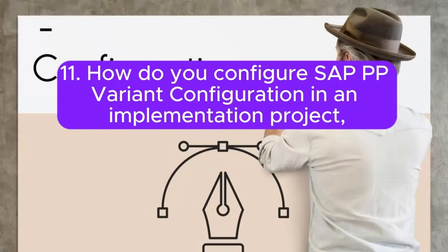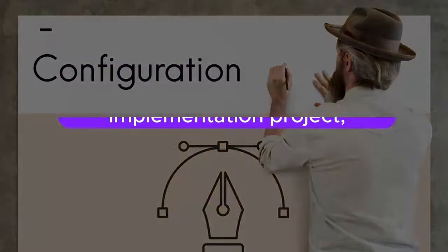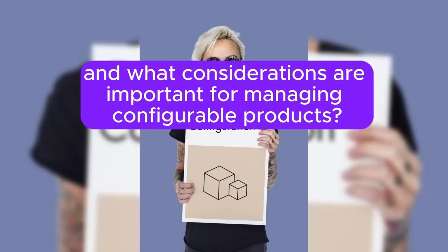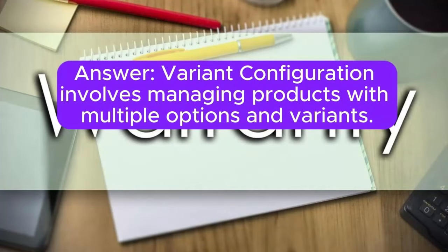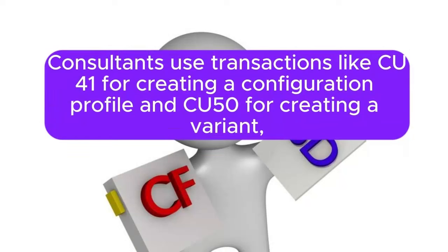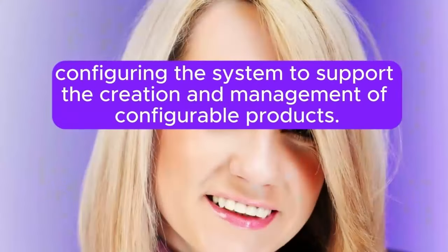Question 11: How do you configure SAP PP variant configuration in an implementation project, and what considerations are important for managing configurable products? Variant configuration involves managing products with multiple options and variants. Consultants use transactions like CU41 for creating a configuration profile and CU50 for creating a variant, configuring the system to support the creation and management of configurable products.